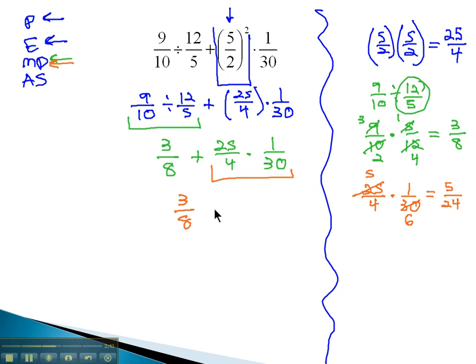The problem now reads 3 eighths plus 5 twenty-fourths. We are now ready for the last step of the order of operations, which is to add and subtract. We recall that the pattern for adding and subtracting with fractions requires us to find a common denominator. We can quickly see, using mental math, that the common denominator of 8 and 24 is simply 24. The 8th, then, needs to be multiplied by 3 over 3, which will give us 9 twenty-fourths, plus the 5 twenty-fourths already has the denominator we want, which equals 14 over 24.